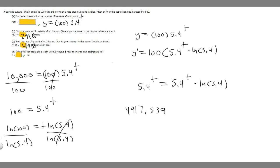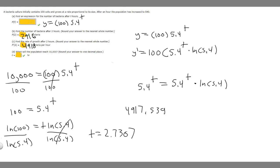Plugging ln(100) divided by ln(5.4) into the calculator gives t equals 2.730... Rounding to one decimal place, since 3 is not bigger than 5, we leave it as 2.7. So the population will reach 10,000 after approximately 2.7 hours. These are all the answers to this problem.